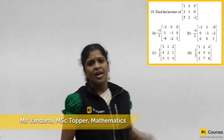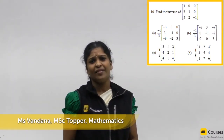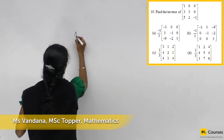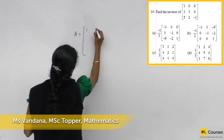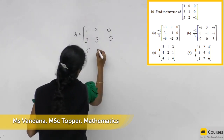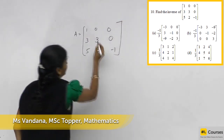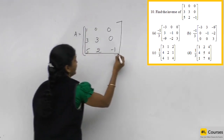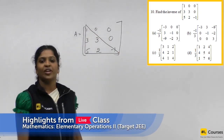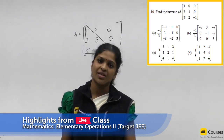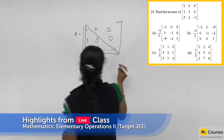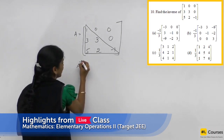See the question, understand the question properly. If you observe it, look at here — very simple question. What is this? It is a lower triangular matrix. For the upper triangular matrix or lower triangular matrix, if we are asking you the inverse...